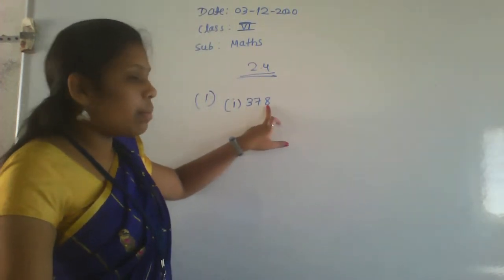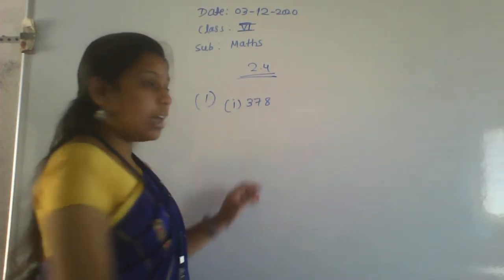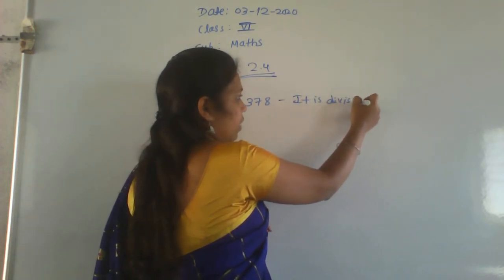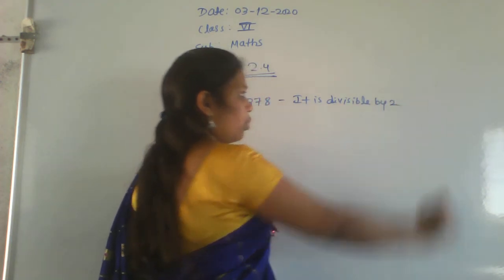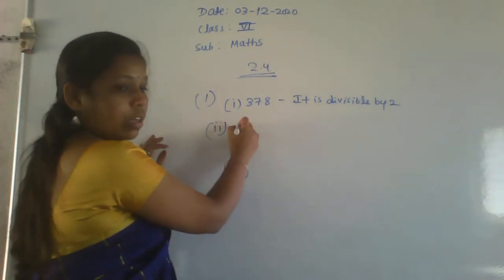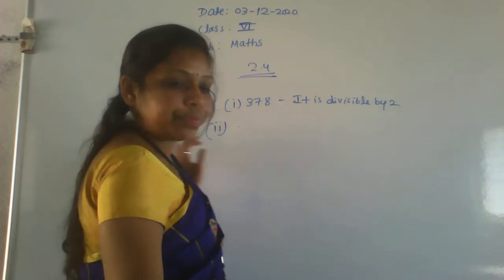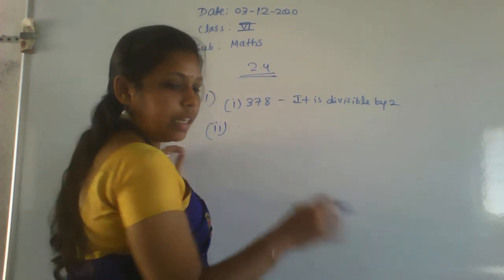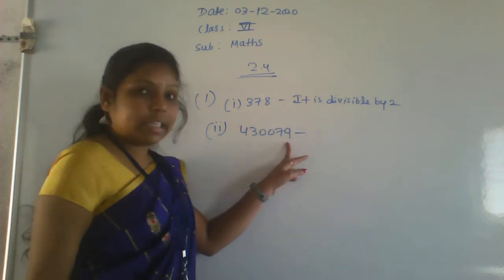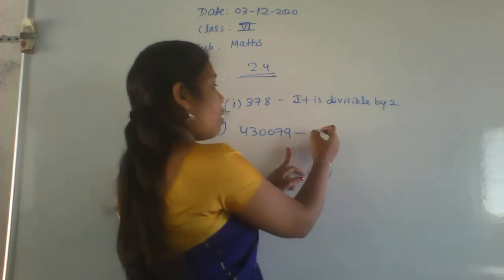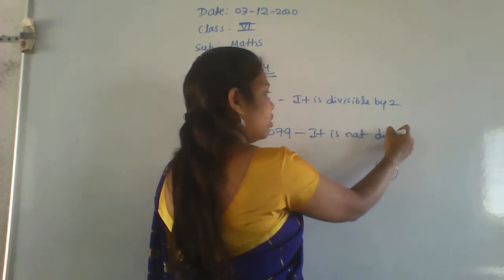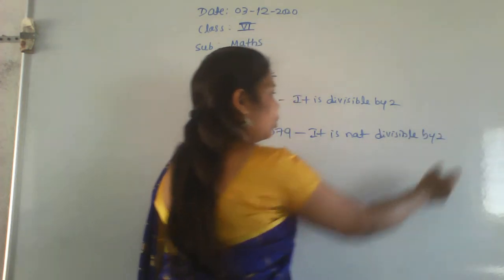Check the first number — the last digit is an even number, hence it is divisible by 2. For the second number, 43079 — whether the last digit is an even number? No. So it is not divisible by 2.